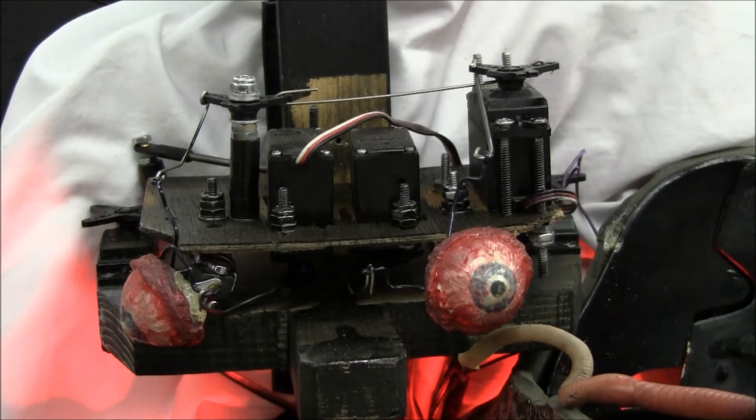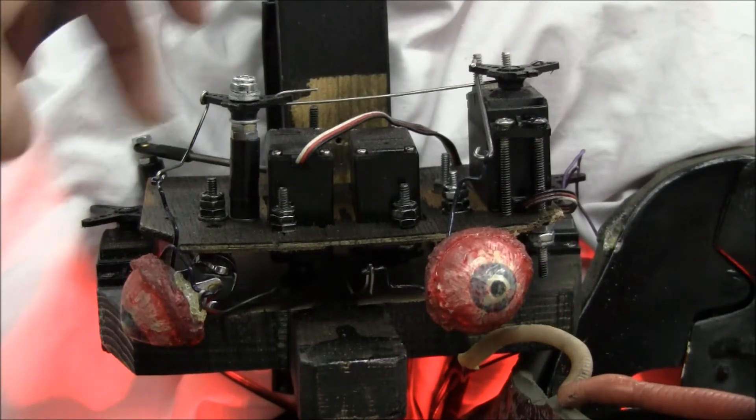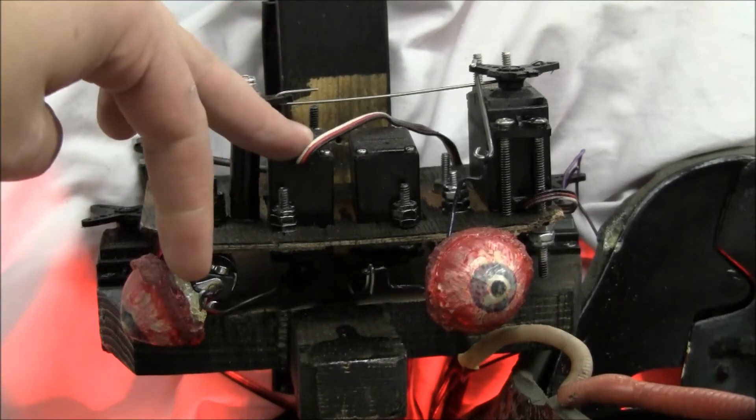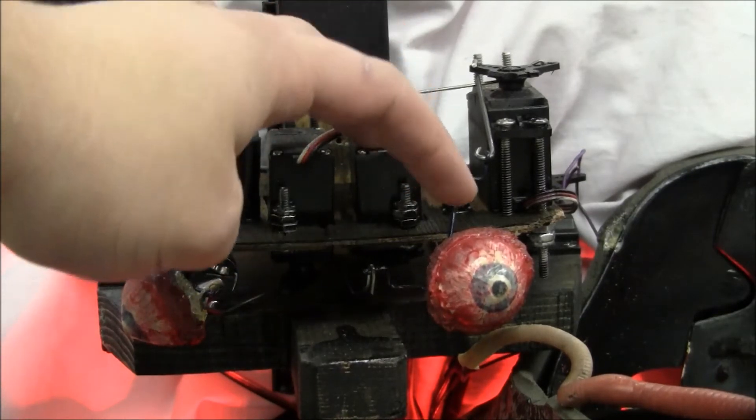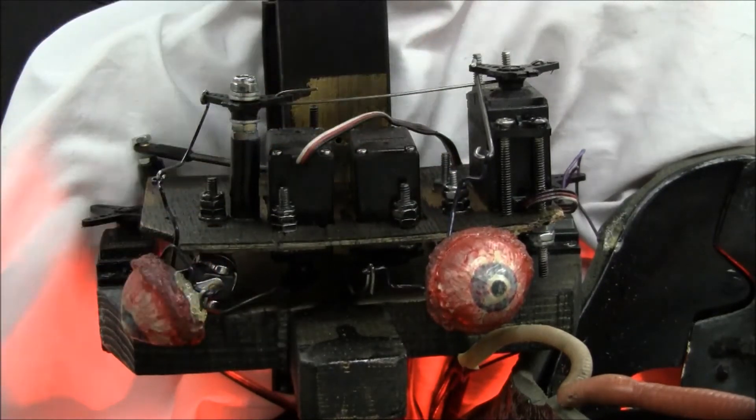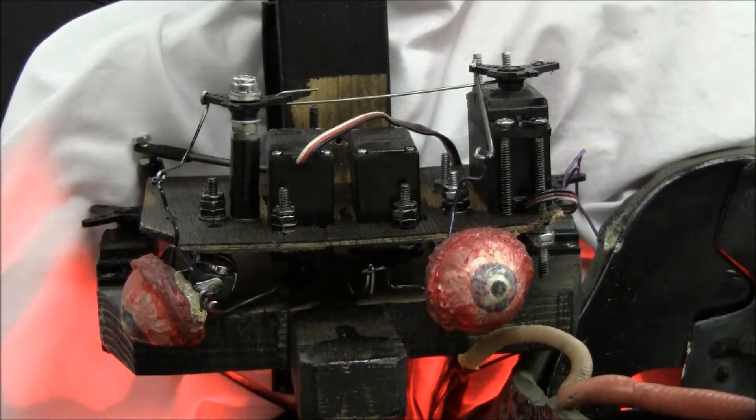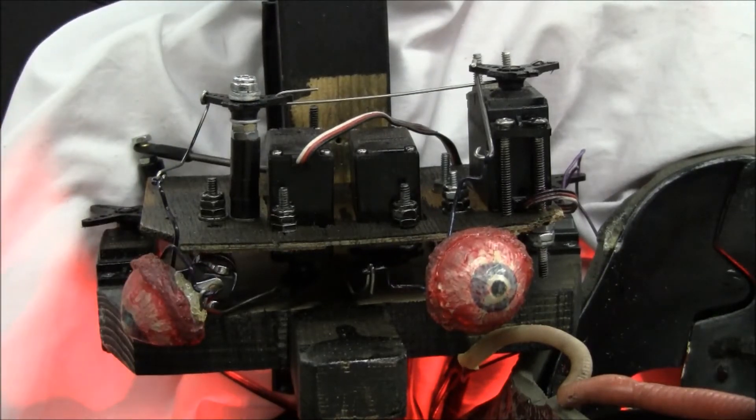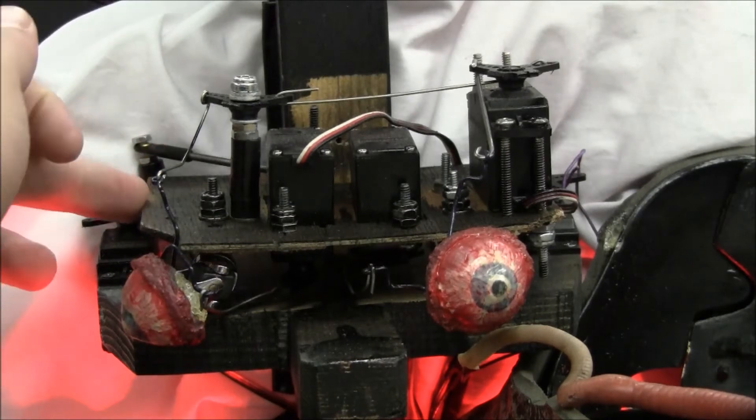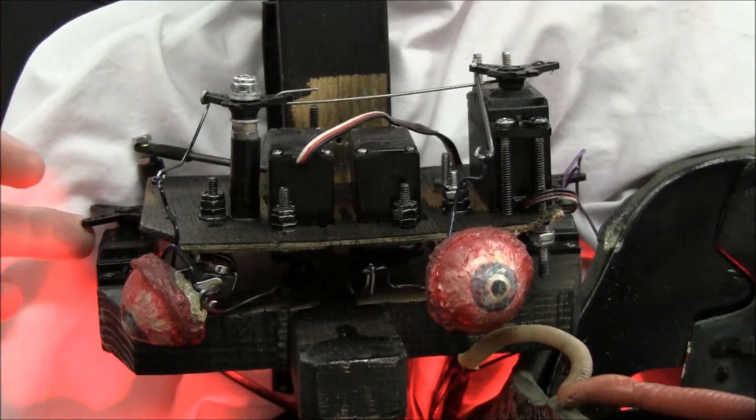With the mask removed, you can see the animatronic eye assembly that we designed. There are four servos controlling these. This servo controls this eye's left and right. This servo controls this eye's left and right. This servo is slaved to control the up and down for both eyes. They can have a pop forward action because they're all mounted to this platform which is controlled by this servo.